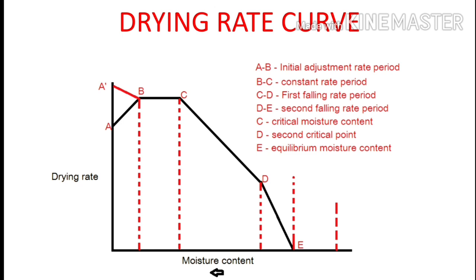On the drying rate curve, line AB represents the initial adjustment rate period, BC stands for the constant rate period, CD represents the first falling rate period, and DE stands for the second falling rate period. Point B is the wet bulb temperature of the drying air, point C is the critical moisture content, point D is the second critical point, and point E is the equilibrium moisture content.